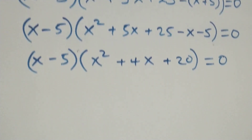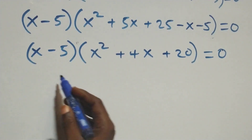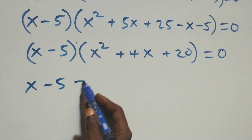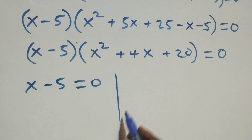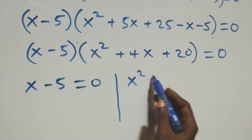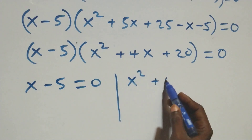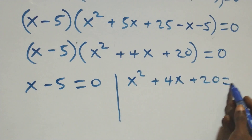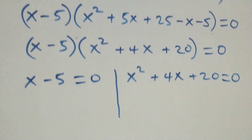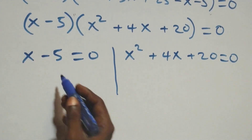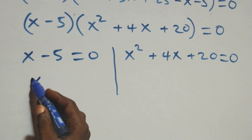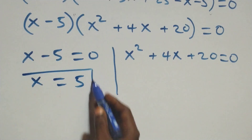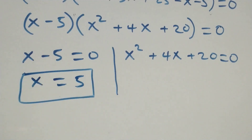At this point we have two possible cases. The first one: x minus 5 equals to 0. Or we have x square plus 4x plus 20 equals to 0. Solving from the first case, this becomes x equals to 5, which is the only real solution from this case.